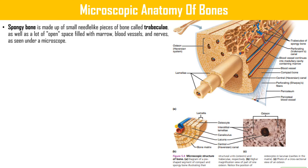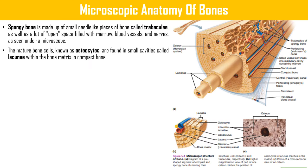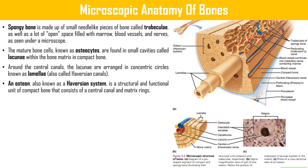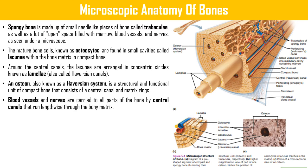Microscopic anatomy of bones: spongy bone is made up of small needle-like pieces of bone called trabeculae, as well as open space filled with marrow, blood vessels, and nerves. As seen under a microscope, mature bone cells known as osteocytes are found in small cavities called lacunae within the bone matrix.